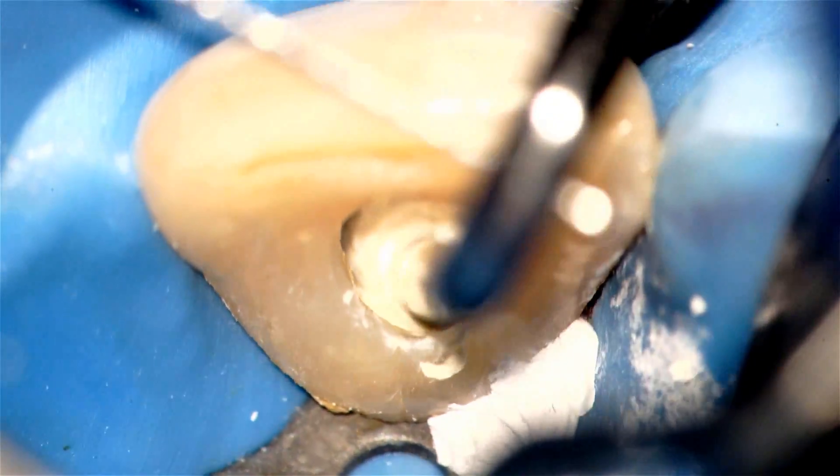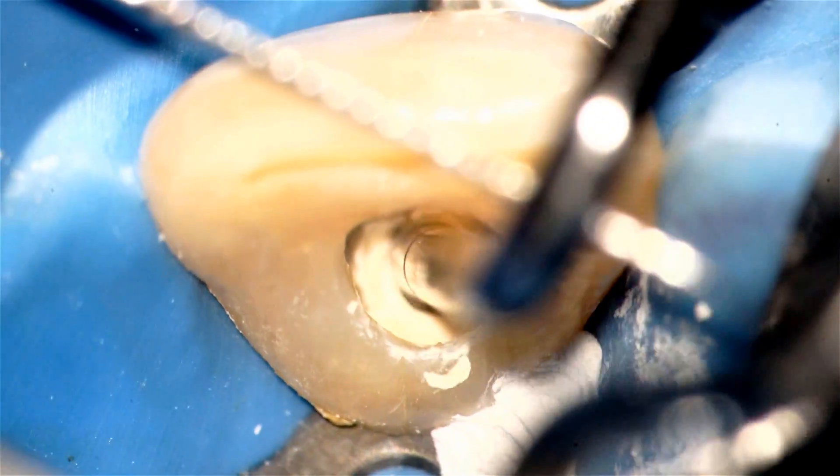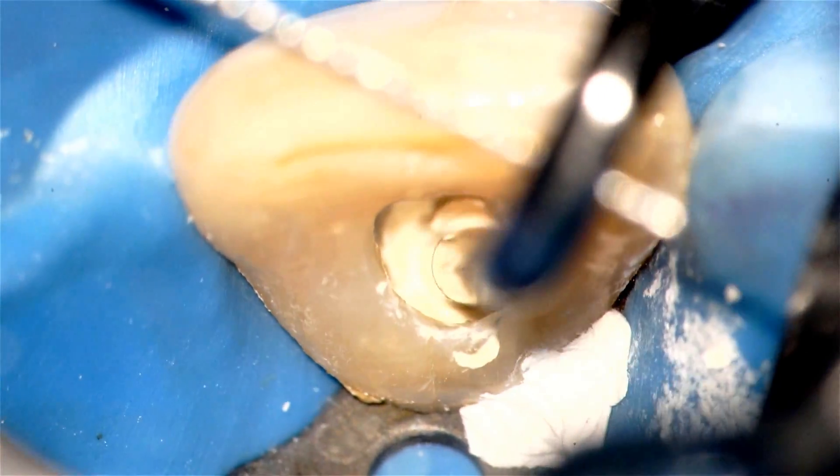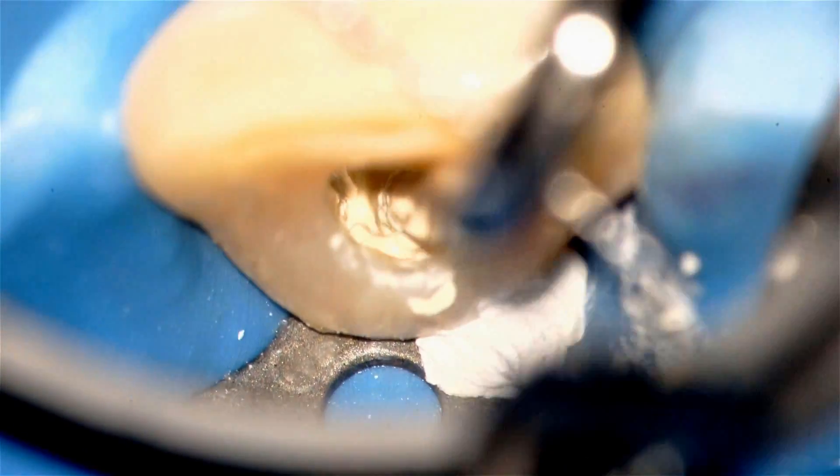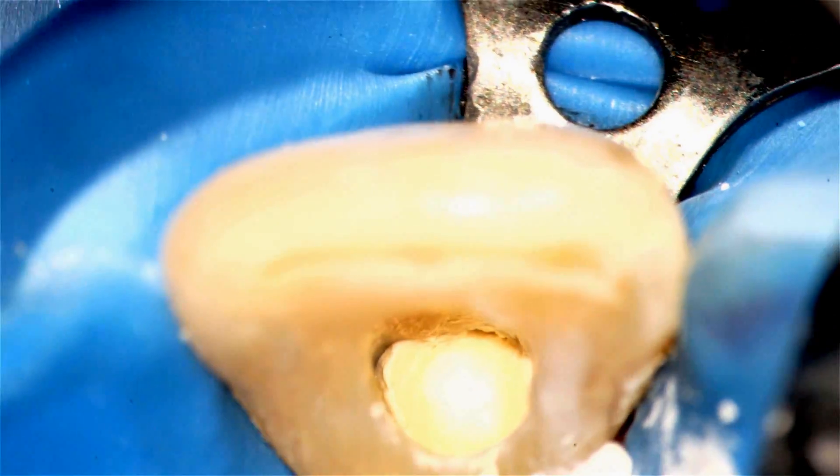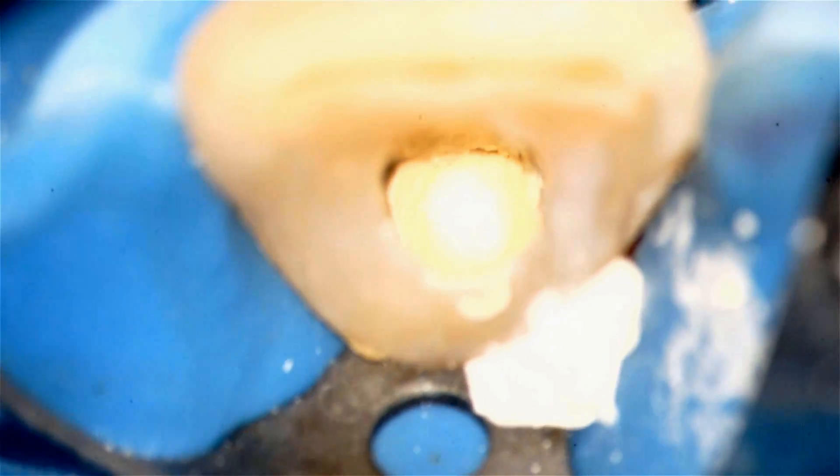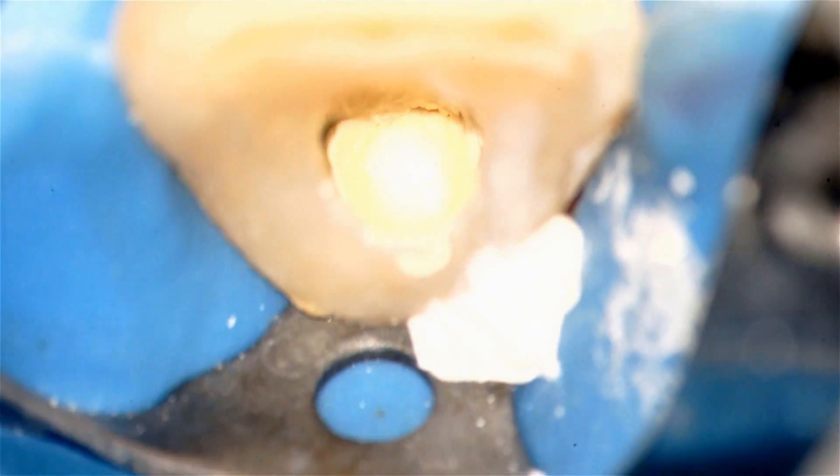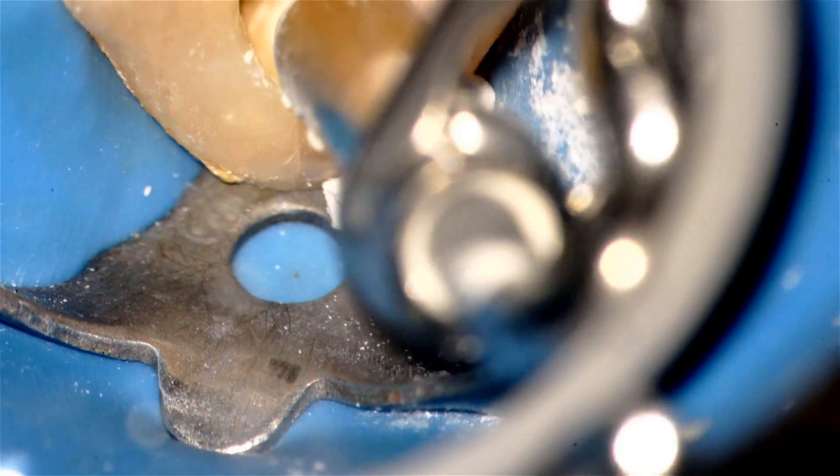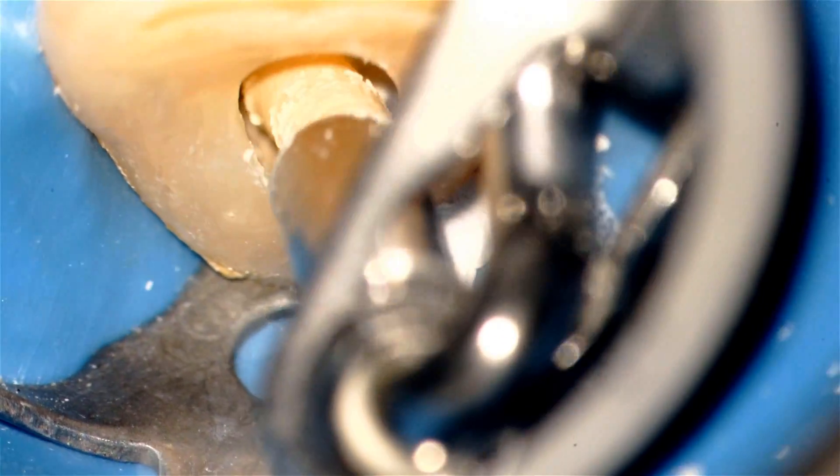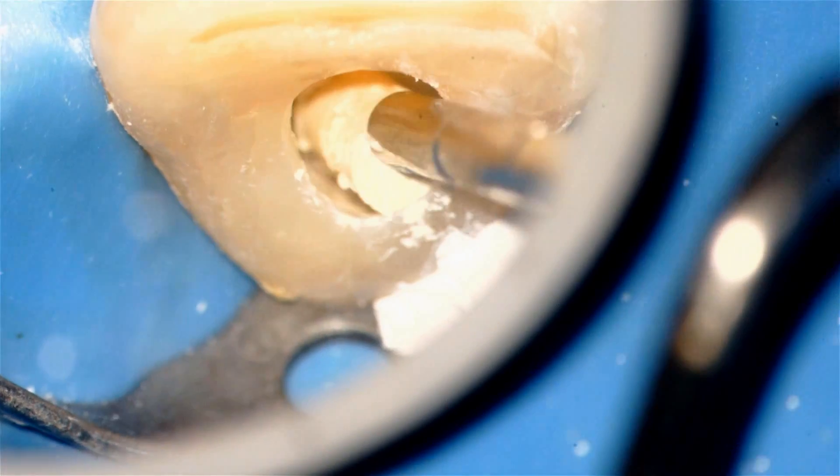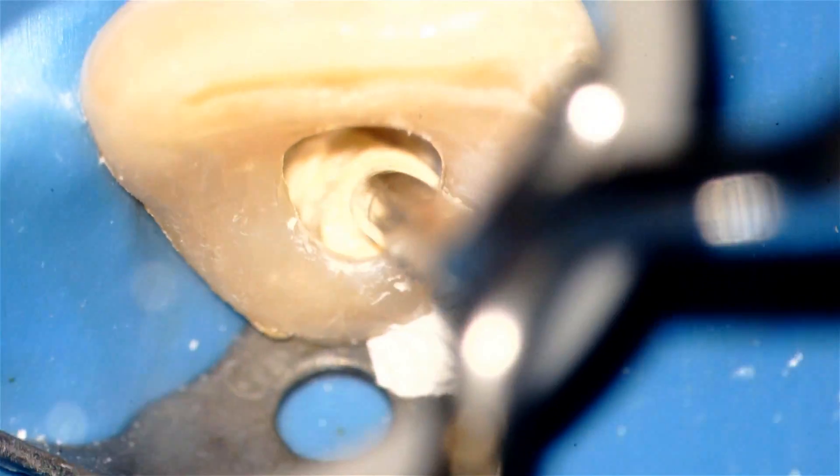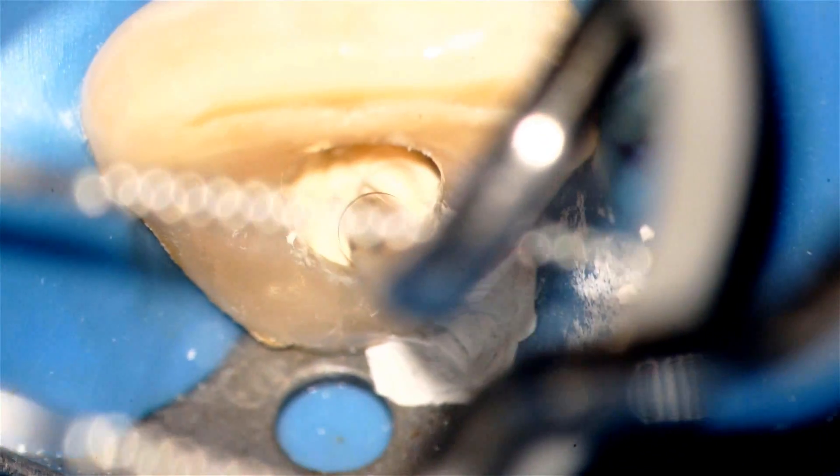So this is an ideal material if there's periodontal communication. So I apply the Biodentine made by Septodont with an amalgam carrier, and I press it down with the large number 12 shoulder plugger in this case. And then I have my assistant apply an ultrasonic file against the side, and I activate it with my foot to activate ultrasonic energy, which causes the Biodentine to flow into the crypt and into the resorption defect.